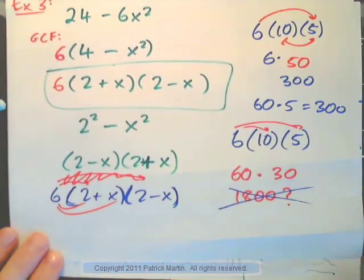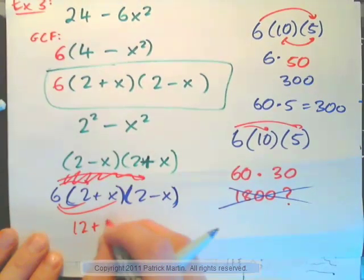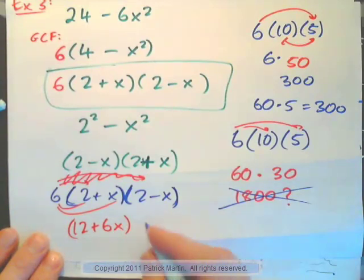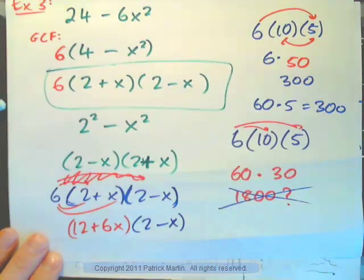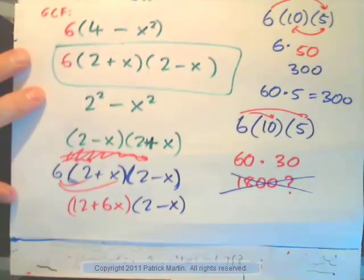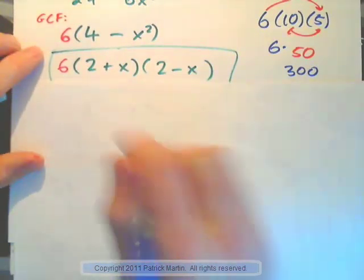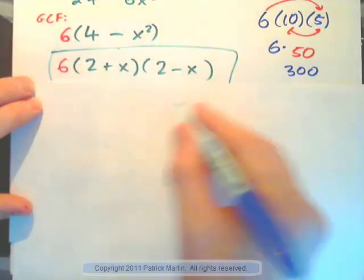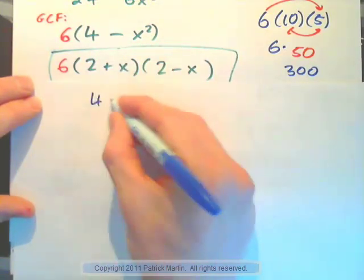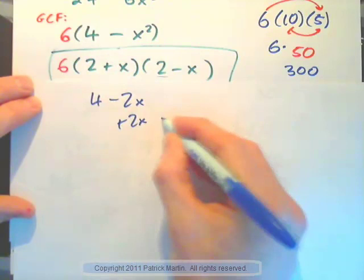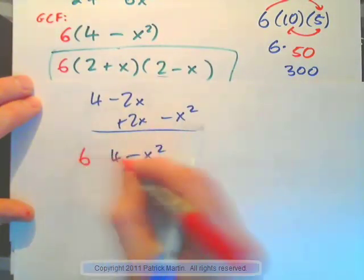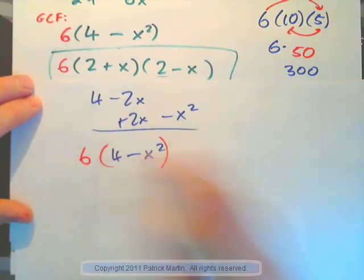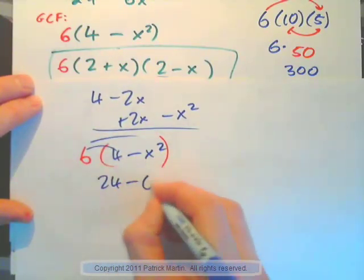The correct way is to distribute the 6 into 2 plus X to get 12 plus 6X, then multiply by 2 minus X to get 24 minus 6X squared. Or more neatly, first multiply 2 plus X times 2 minus X to get 4 minus 2X plus 2X minus X squared, which simplifies to 4 minus X squared, then multiply the 6 in to get 24 minus 6X squared.